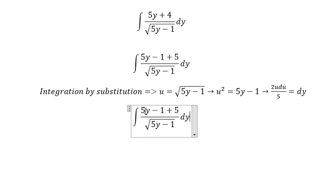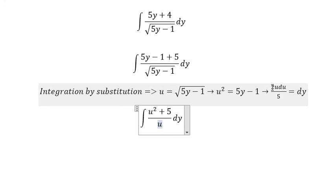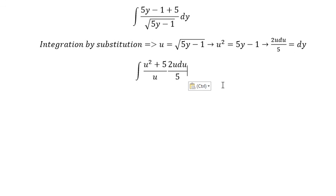Now we have 5y minus 1, we change to u squared. The square root we change to u. dy we change for this one, and now we need to simplify.